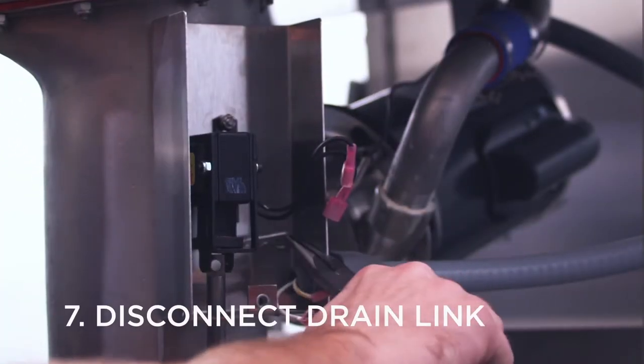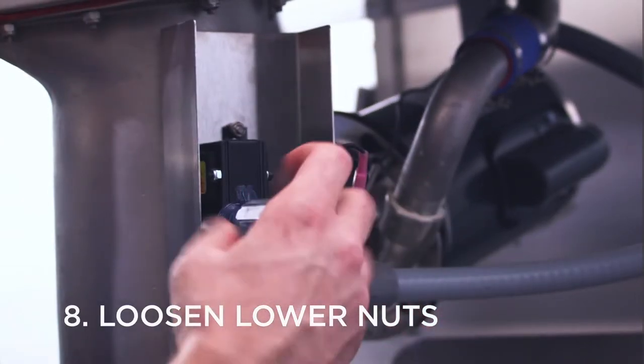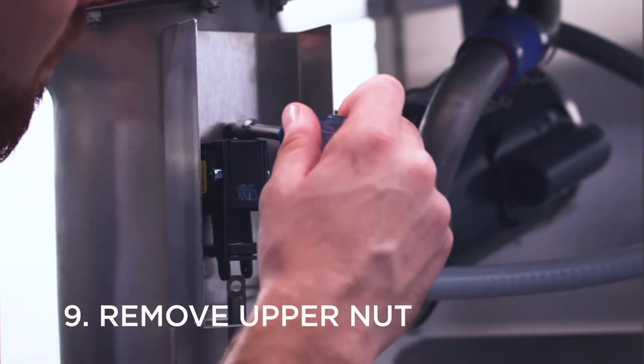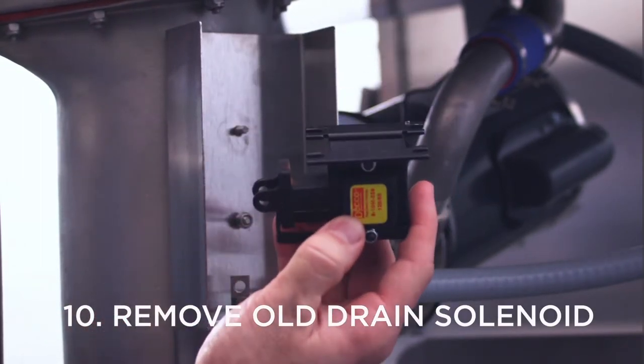Remove the cottering pin to disconnect the drain link. Use a 3/8th socket wrench to loosen the lower mounting nuts and remove the upper mounting nut. Then, slide the old drain solenoid out of its housing.